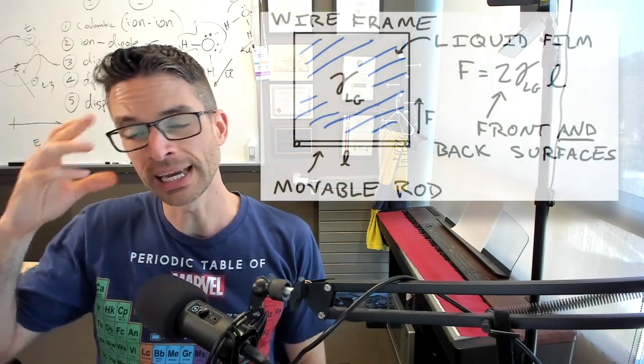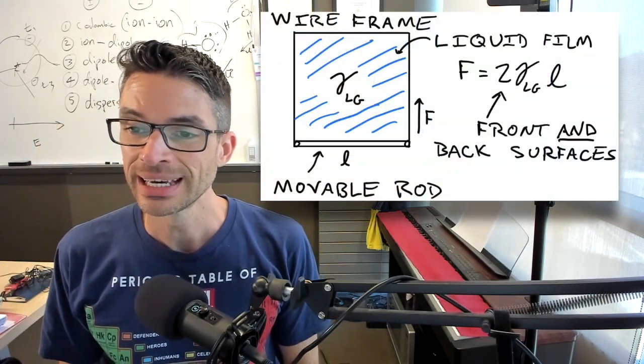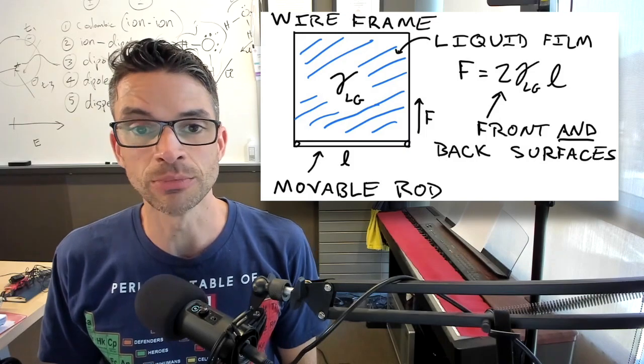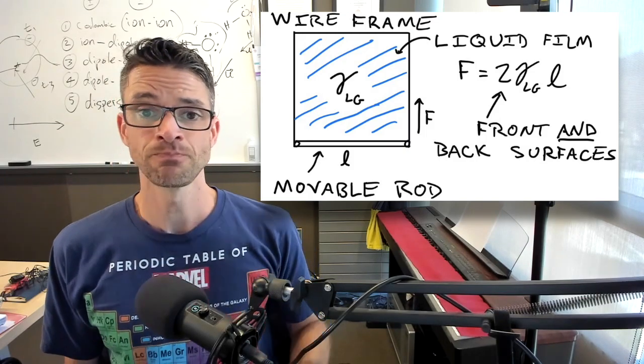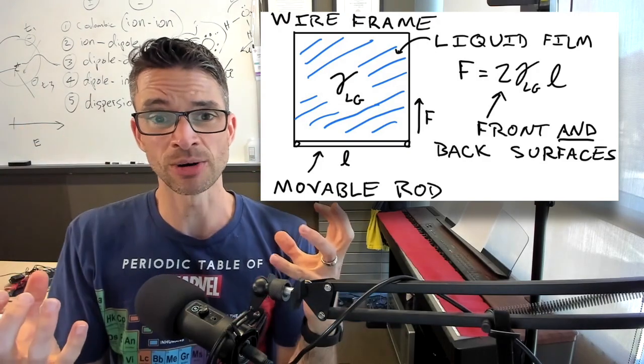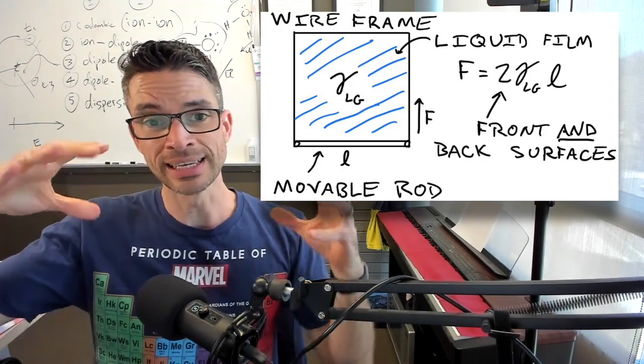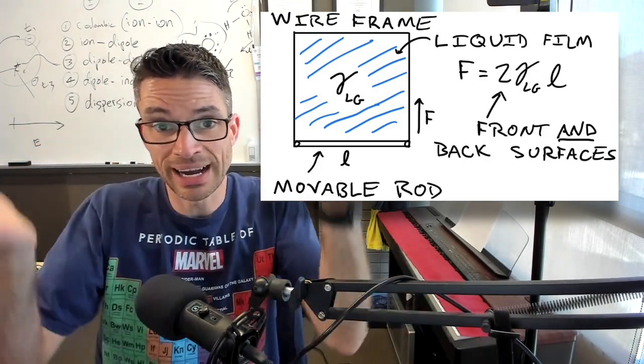And in this figure, we're showing a wire frame that has a liquid film and a movable rod at the bottom. Now gravity is pulling down on this liquid rod. And the liquid film is pulling back up.